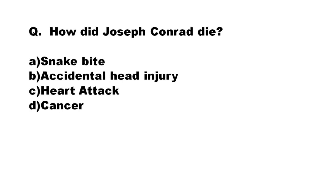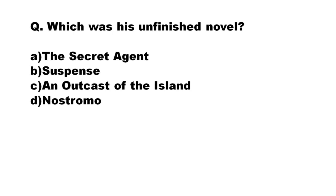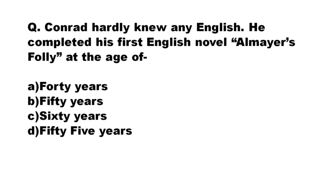Our next question: how did Joseph Conrad die? The options are snake bite, accidental head injury, heart attack, cancer. The correct answer is option C: heart attack. Our next question: which was his unfinished novel? The options are: A) The Secret Agent, B) Suspense, C) An Outcast of the Islands, D) Nostromo. The correct answer is Suspense. Do remember — many times questions are asked in UGC NET about which was a writer's unfinished novel, so Suspense is Joseph Conrad's unfinished novel.